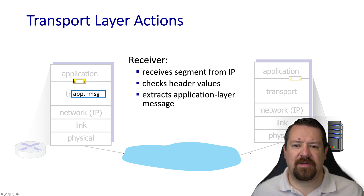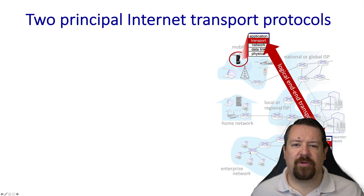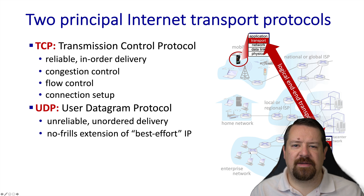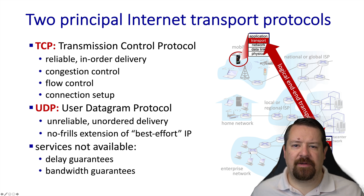A quick review of the two transport protocols commonly seen in the internet: TCP provides reliability, in-order delivery, congestion control, and flow control, and to do this it utilizes a connection setup process. UDP offers none of these things — it simply provides multiplexing and demultiplexing on top of the IP best-effort service. Some applications would like bandwidth or delay guarantees, but the underlying internet service does not offer these, and the transport layers are unable to create these services on top of it.